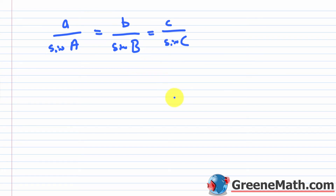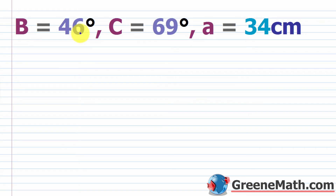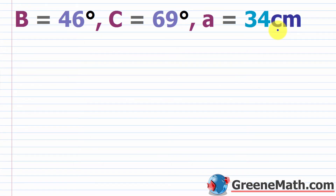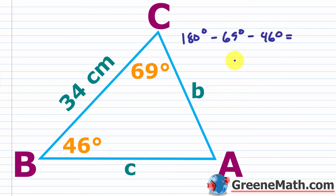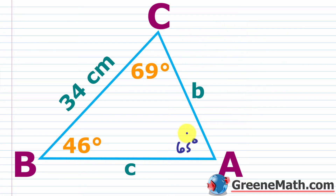Let's look at an example. We're given B equals 46 degrees, C equals 69 degrees, and side a equals 34 centimeters. Draw a little sketch — angle B is 46 degrees, angle C is 69 degrees, and side a opposite angle A is 34 centimeters. To find angle A, use the triangle sum property: 180 minus 69 minus 46 equals 65 degrees. So angle A equals 65 degrees.